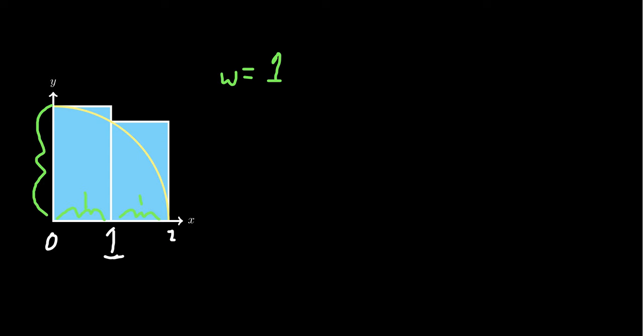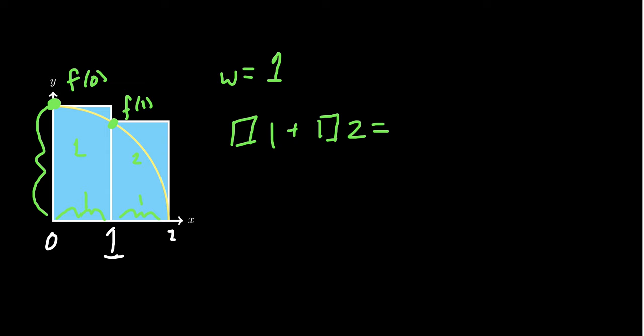To determine the height, we want it to coincide with the height of the function. What if we pick the left endpoint of each interval? The height of the first rectangle is f(0), and the height of the second is f(1). Then the total area is length₁ × width₁ + length₂ × width₂.